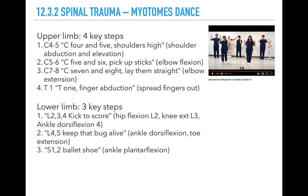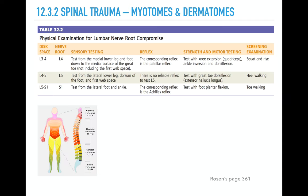For upper limb myotomes, I think of: C4-5, shoulders high. C5-6, pick up sticks. C7-8, lay them straight. T1, abduction. That covers the main upper limb myotomes. For the lower limb, three things to remember: L2-3-4, kick to score. L4-5, keep that bug alive — that's standing on your heels. And S1-2, ballet shoe — that's tippy toes. To reiterate: L4 is your medial malleolus, L5 is your first web space, S1 is the lateral foot.